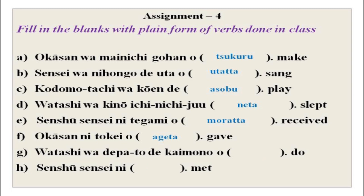Sometimes you will notice that in Japanese conversation, we do not use the subject. For example, watashi wa okasan ni tokei wo ageta or agemashita - the watashi wa is omitted. It is not written; it is understood. Please keep that in mind. Okasan ni tokei wo ageta. Watashi wa depato de kaimono wo suru, shimasu. Sensei ni atta, agemashita.